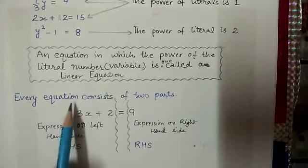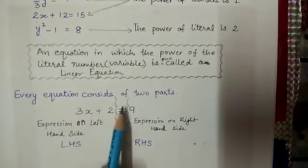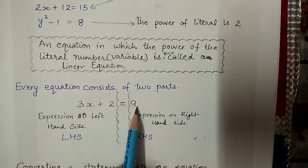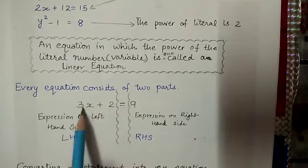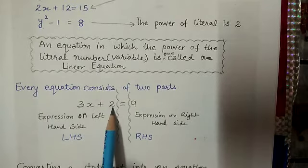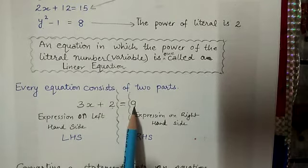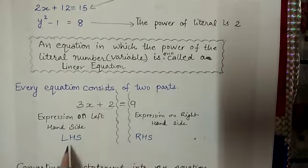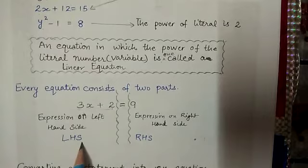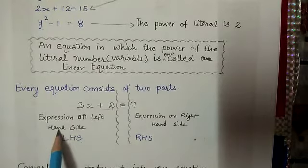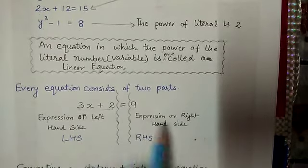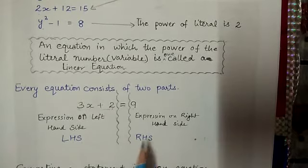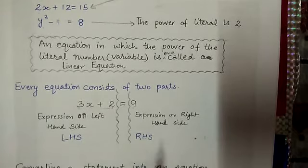Every equation consists of two parts. 3x plus 2 equals 9. One is in the left hand side of the equation, and another is on the right hand side. This expression is known as LHS, that is left hand side, and this one is known as right hand side, that is RHS.